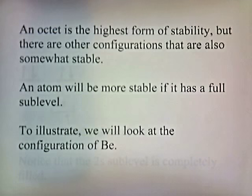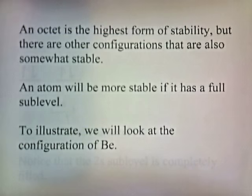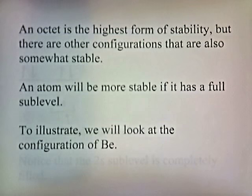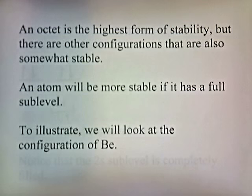An octet is the highest form of stability, but there are other configurations that are also somewhat stable. An atom will be more stable if it has a full sublevel.